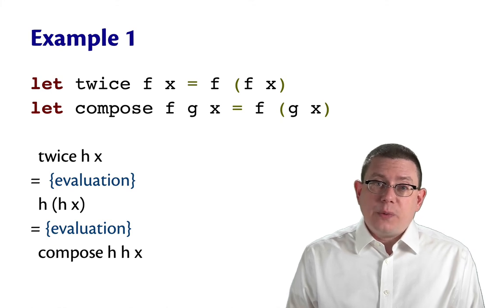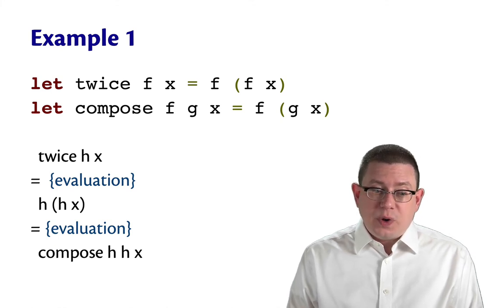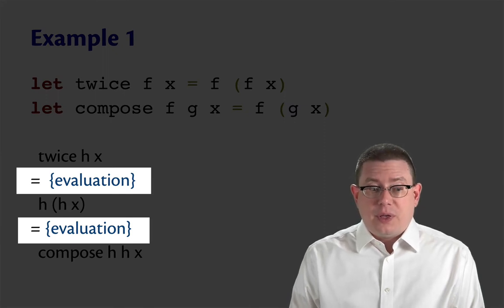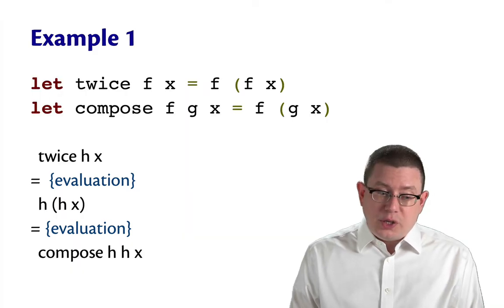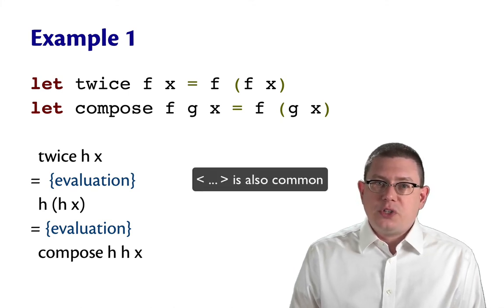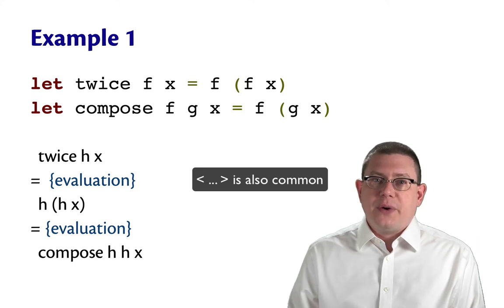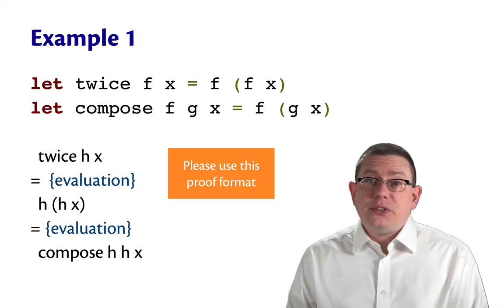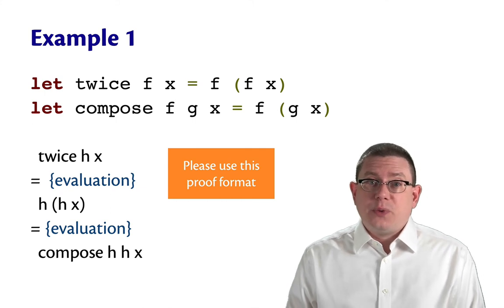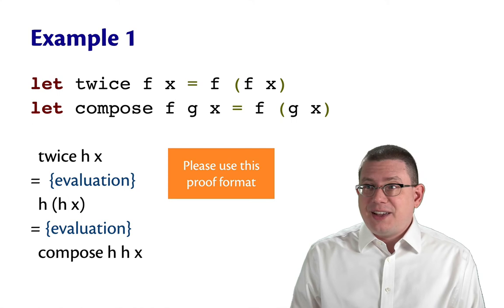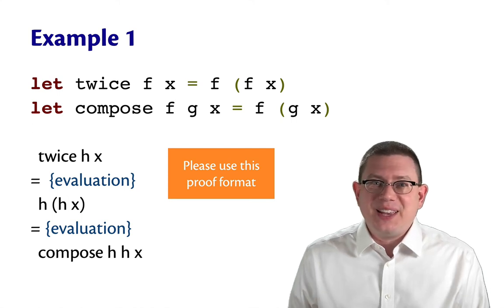And on each line where we write an equality, we don't write code with it. Instead, we write a justification of the proof step. I'm going to put those justifications in curly braces. Although, of all the variants on this notation, exactly which choice of delimiter to use there is probably the one on which there's the most variation. So I'm going to ask you to please use this proof format as you work through examples and learn this material. It is one that's part of the vocabulary of this area.